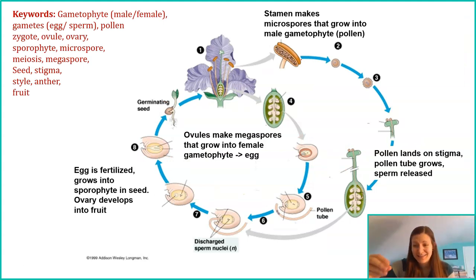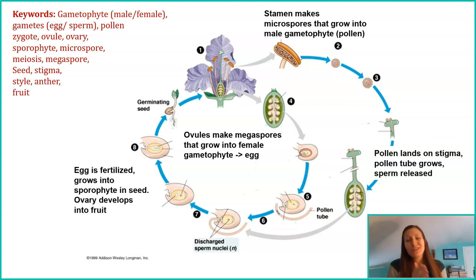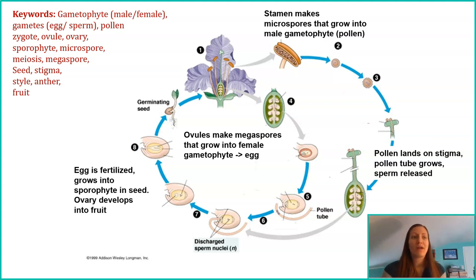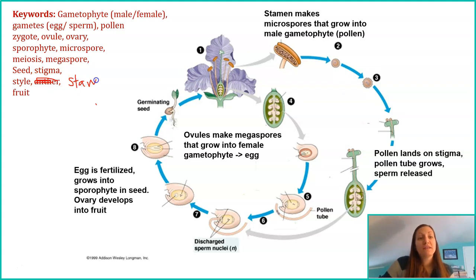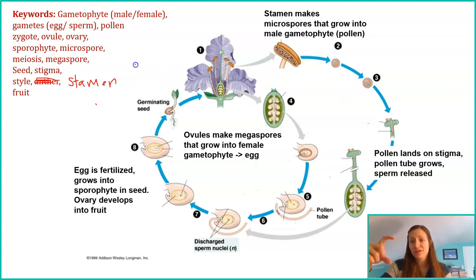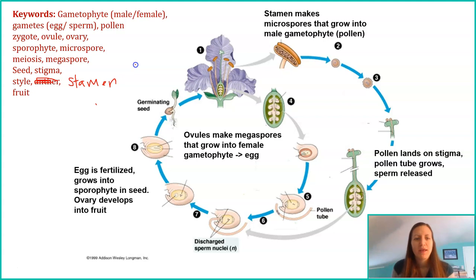Now our last life cycle. Pretty much all of these words we saw with the conifers: male and female gametophytes, egg and sperm for our gametes, pollen, a zygote, ovule and ovary, the sporophyte, the micro- and megaspore, meiosis, the seed, the stigma, the style, the stamen, and the fruit. We're just using 'stamen' now — the anther is one of the specific structures within the stamen, but we'll keep it general with stamen.